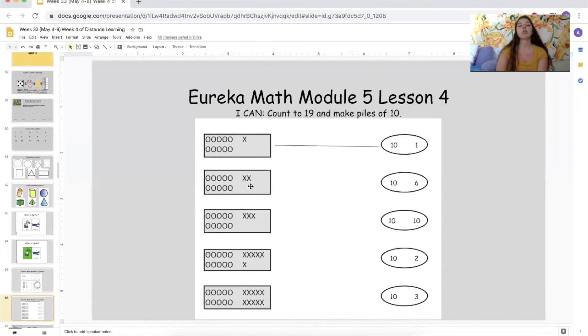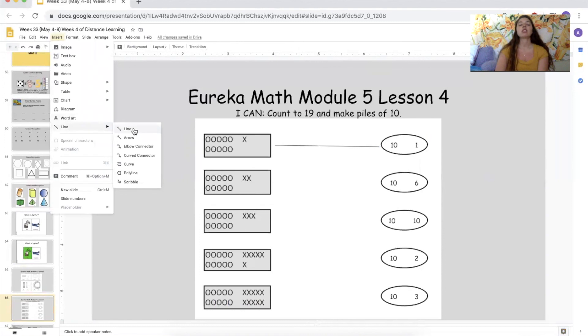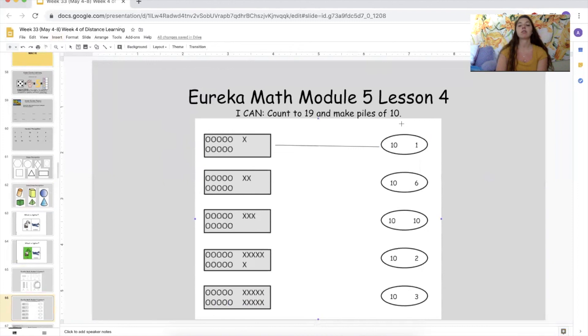Let's do another one. You count these. 10 and how many? Two. So we should be looking for a group of 10 and a group of two. Where do you see that over here? Do you see 10 and two here? No. Do you see 10 and two here? No. That's 10 and three. How about this one? 10 and two. Yes. So we're going to draw a line and match them. Very, very good.